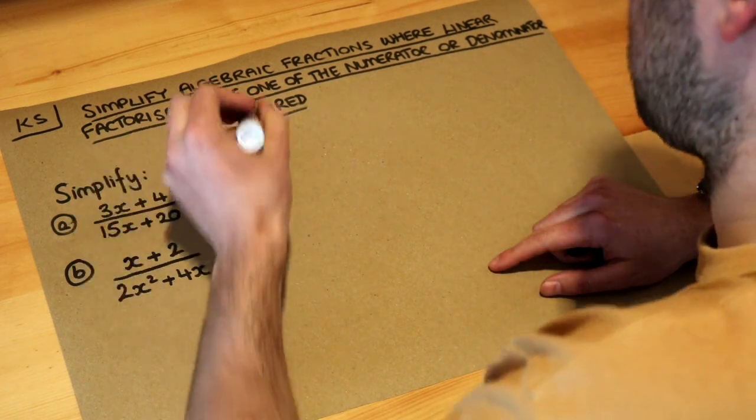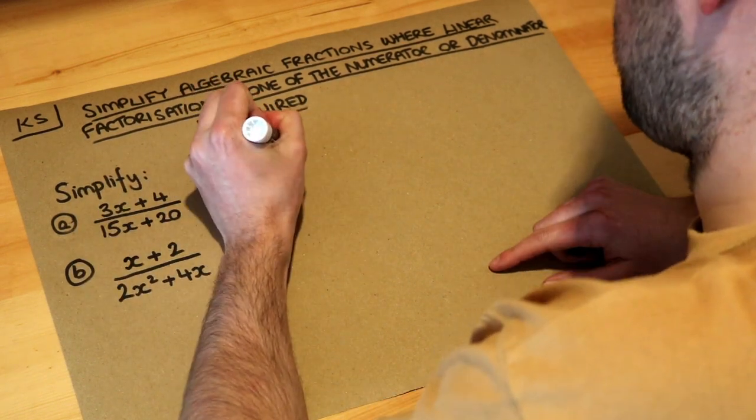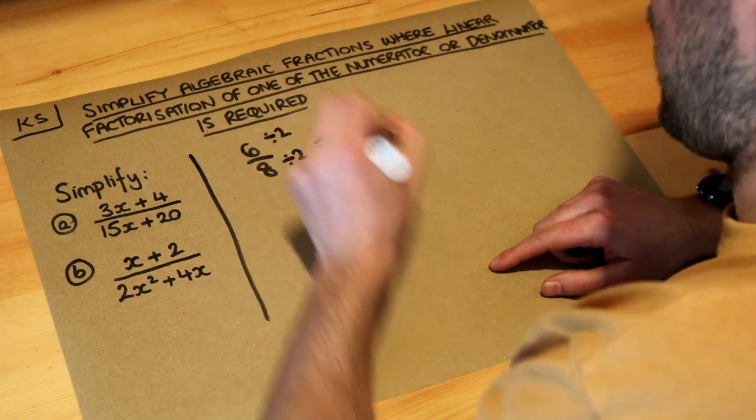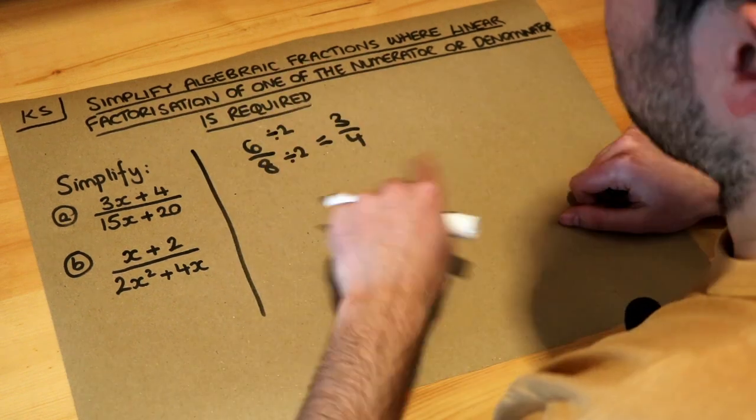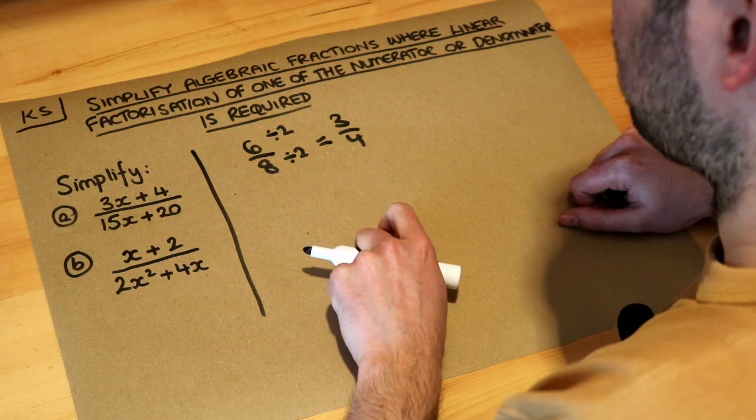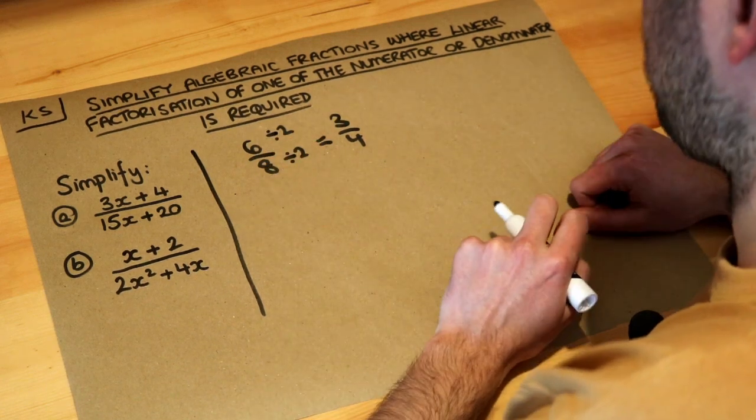So what number goes into 6 and goes into 8? Well 2's a factor of 6, 2's a factor of 8, and you divide top and bottom by 2 and that would then give you 3 over 4. So the principle in general of simplifying fractions is to divide by a common factor.